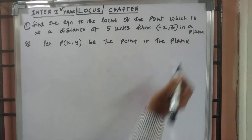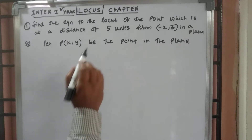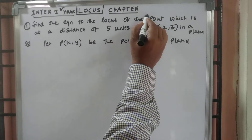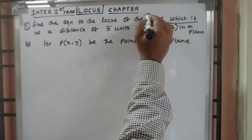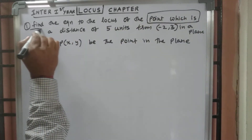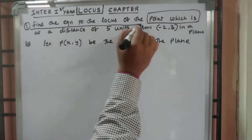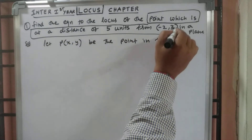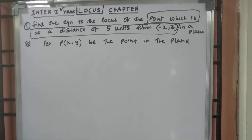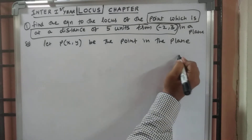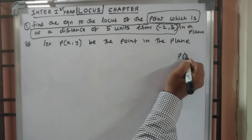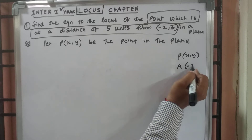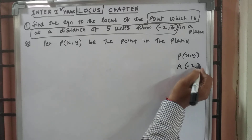Let P of X comma Y be the point in the plane. The given point is at a distance of 5 units from the point minus 2 comma 3. So P of X comma Y is the point in the locus. Let this minus 2 comma 3 be capital A.